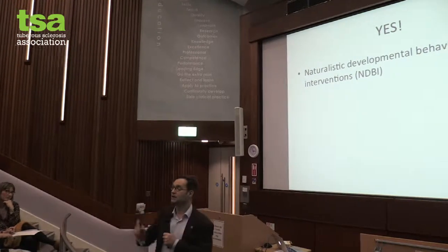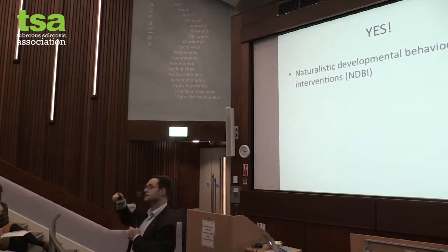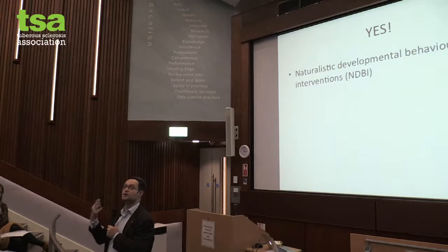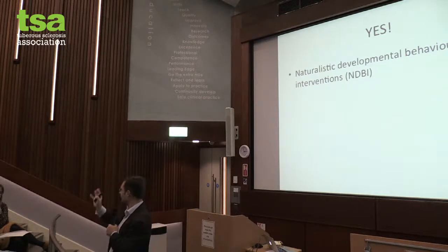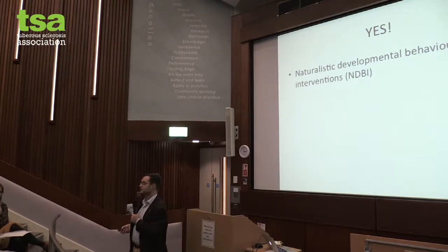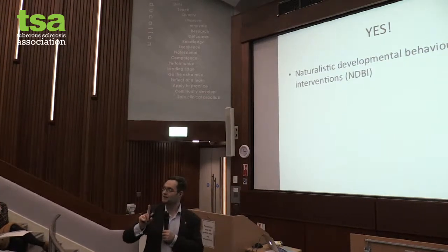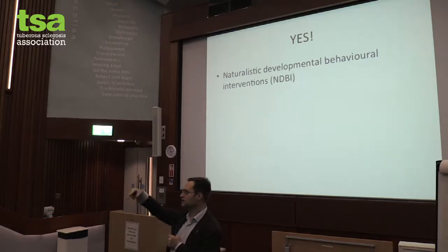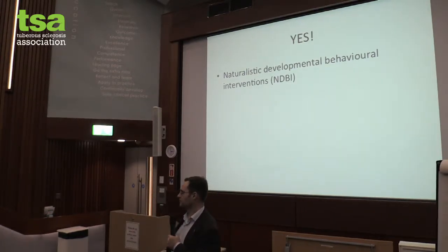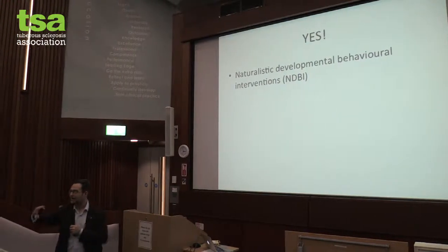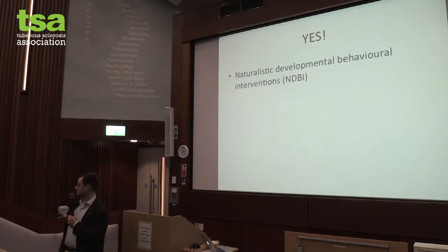There's a very nice intervention called the Early Start Denver Model (ESDM) — there's a parent book you can buy on Amazon that teaches many of these simple principles. The earlier we start, the more likely we are to change things — but we can always improve things. Even if you're 20, 30, or 40 and you have ASD, we can use the same principles to help develop communication. We should believe they can learn to speak and change some of these core inflexible and repetitive behaviours — and then we see that 90% of people with autism learn to speak.